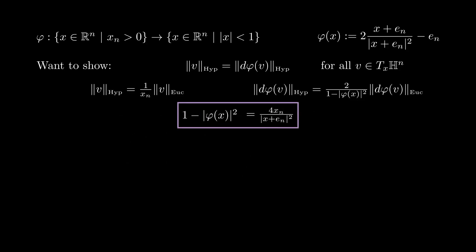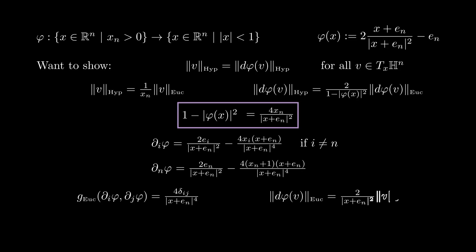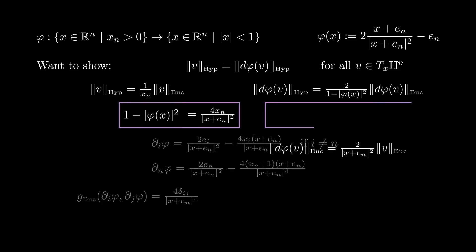The next step is to compute the partial derivatives of phi using the quotient rule. We get two different formulas, one that works for almost all directions, and one for the partial derivative in the nth direction. A computation like the one for the stereographic projection shows that when we take the inner products of these partial derivatives, we get something quite simple as most terms will cancel out. Notice that this matrix is a multiple of the identity, meaning that d phi only rescales vectors by a fixed amount, that fixed amount being 2 over the norm of x plus e_n squared.